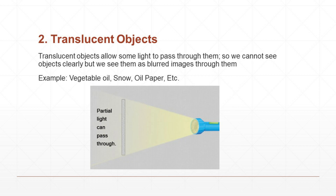Next, we will learn about translucent objects. The spelling is T-R-A-N-S-L-U-C-E-N-T. Translucent objects allow some light to pass through them, so we cannot see objects clearly — we see them as blurred images through them.